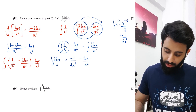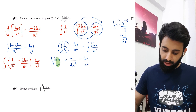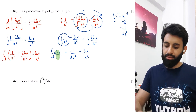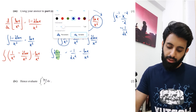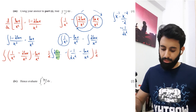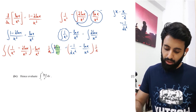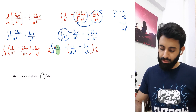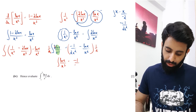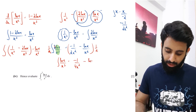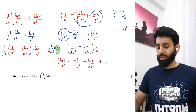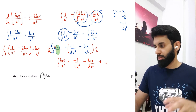To get the integral of ln(x)/x^3 alone, divide both sides by 2 (or multiply by 1/2). The 2 cancels, giving: the integral of lnx/x^3 = minus 1/(4x^2) minus lnx/(2x^2) + c. Don't forget the plus c.